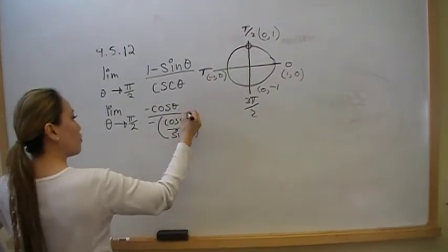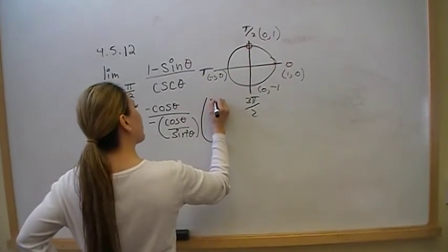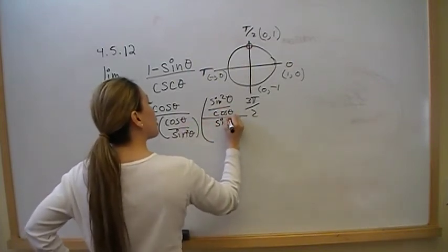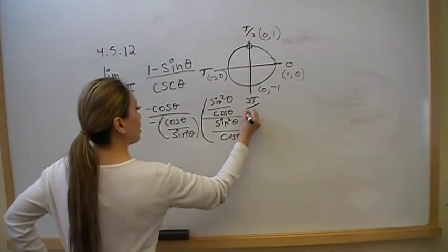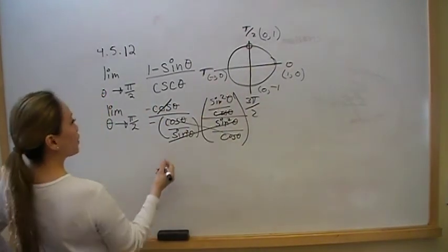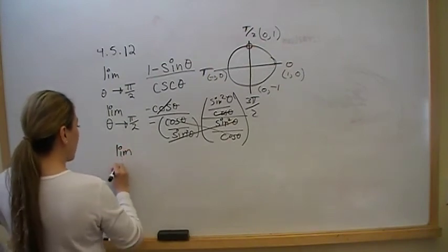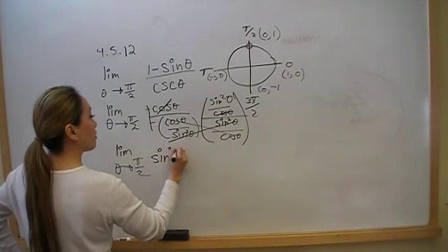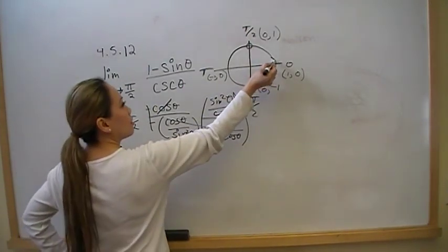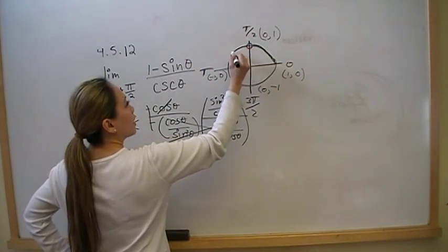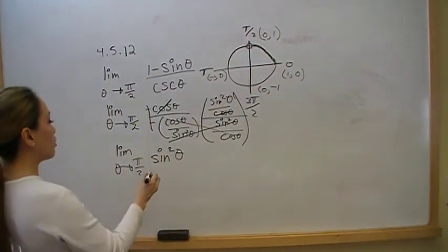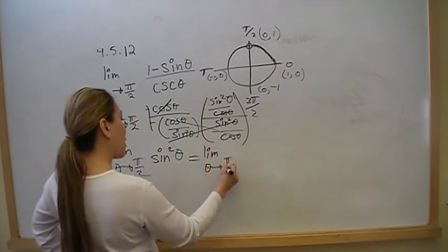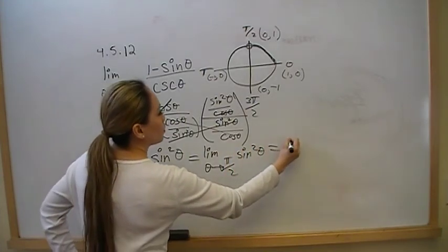The cosines cancel out if we multiply top and bottom by sine squared theta over cosine theta. To get rid of the fraction in the denominator, we get sine squared theta over cosine theta, the cosines cancel, and we're left with the limit as theta goes to pi over 2 of sine squared theta. The negatives also cancel, and as theta approaches pi over 2, sine approaches 1, so we get 1 squared, which is 1.